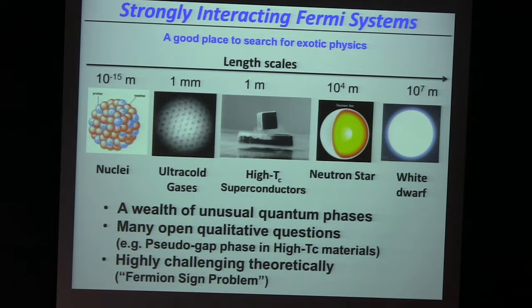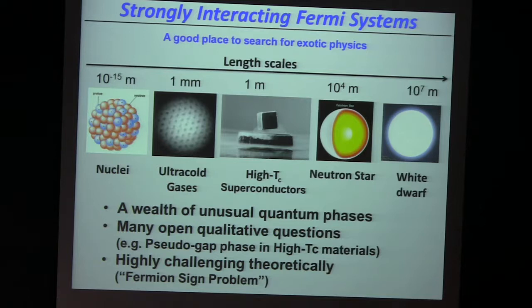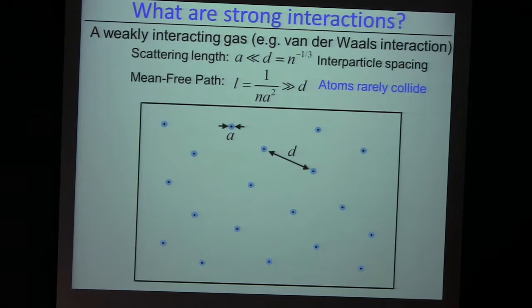Yet, they're wonderful objects because they're prohibited from further shrinking just by Pauli pressure, balancing out the gravitational attraction. We find, of course, the fermions inside nuclei — strongly interacting protons and neutrons. Another example are high-Tc superconductors, notoriously difficult to understand because these electrons are very strongly interacting. So we love our ultra-cold gases to provide a link between these very different systems at very different densities.